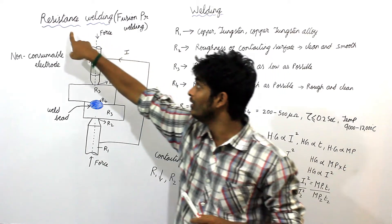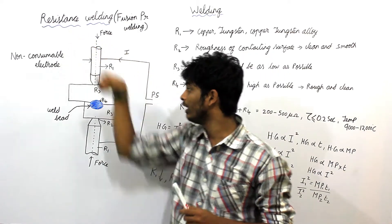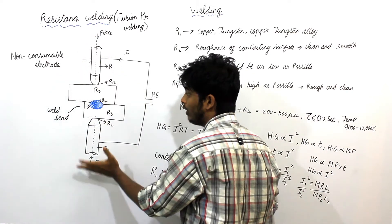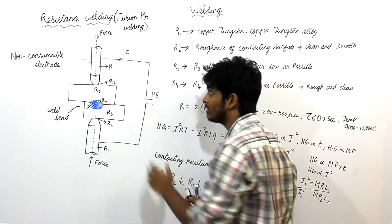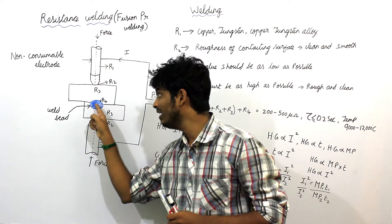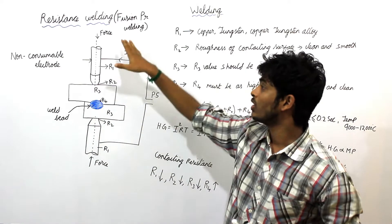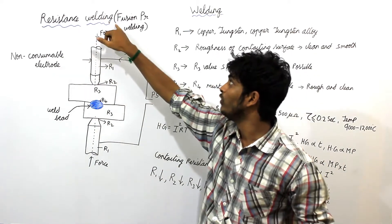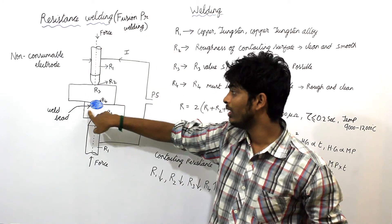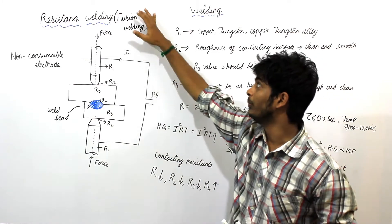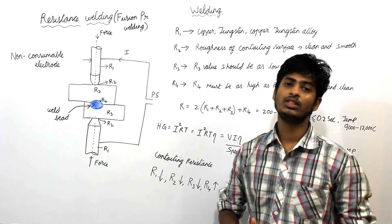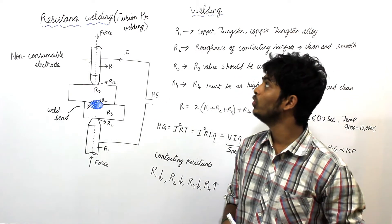In resistance welding, we are applying pressure — force is applied on both sides of the electrode. The parent metal is also melted and welded. So we call resistance welding a fusion pressure welding process: fusion because the parent metal is melted by heat, and pressure because it is also applied on both sides.